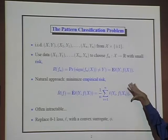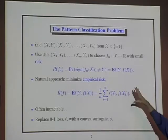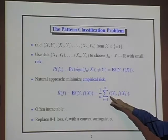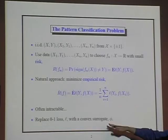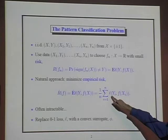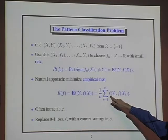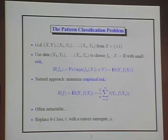That's typically computationally intractable. It's common to replace this discrete indicator of making a mistake — getting the sign wrong — with some kind of a convex surrogate. That's the approach taken with large margin classifiers: we replace the indicator for a mistake with some convex loss function and work with that.